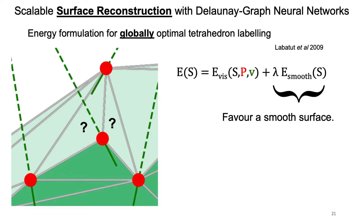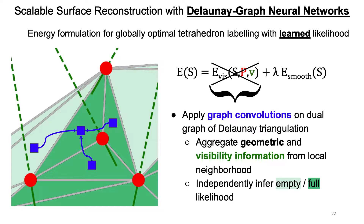This method is very popular because it leads to impressive visual results for very large scale point clouds, but it cannot guarantee to always make the best decision locally. To overcome this limitation, in our work we replace the data term in this energy by empty-full likelihoods predicted by a graph neural network. This graph neural network operates on the dual of the Delaunay triangulation and aggregates geometric and visibility information from the local neighborhood of each tetrahedron, then independently infers an empty-full likelihood for each tetrahedron.